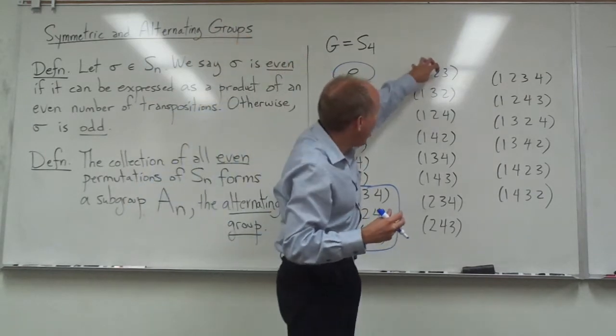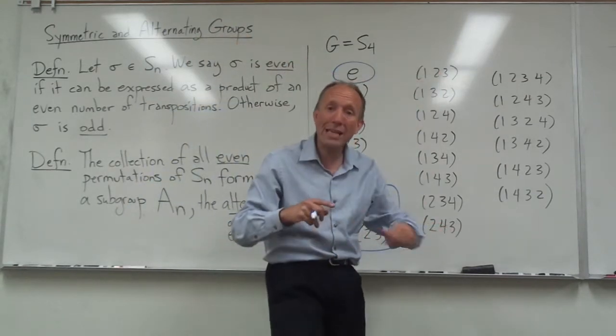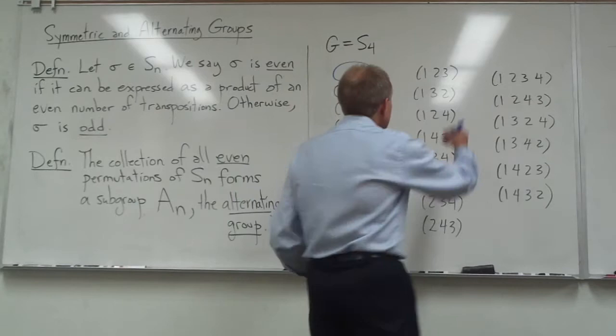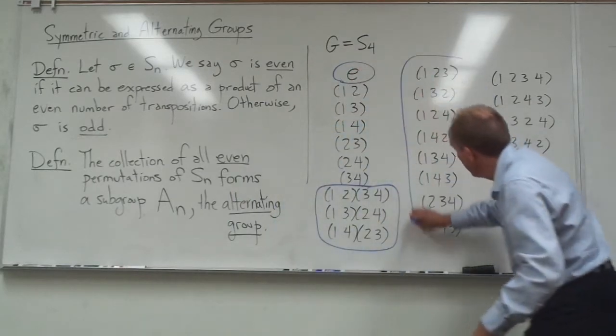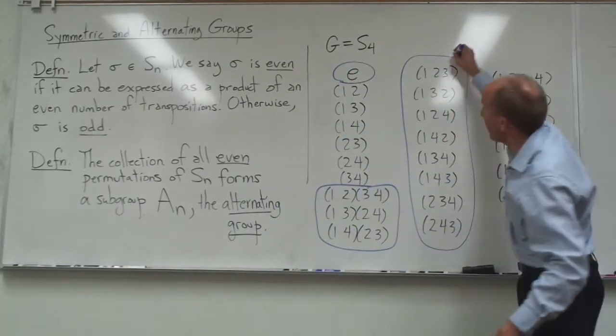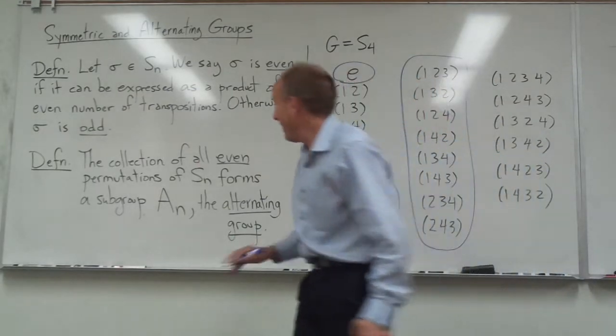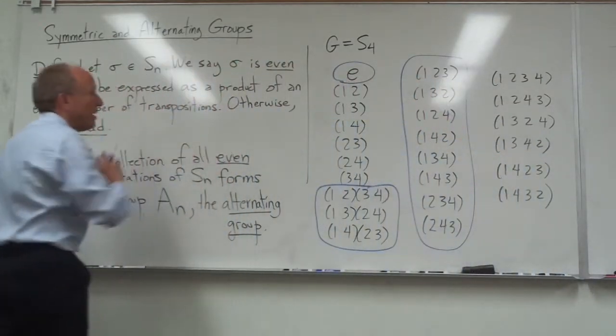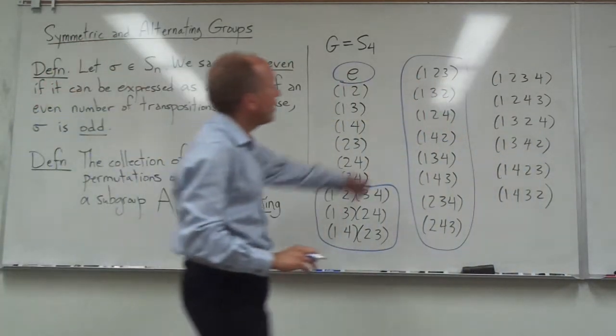Well, these cycles have odd length, which means as permutations in Sn, they are even, which puts them squarely inside of A4. A4 is the even permutations. On the other hand, the cycles of length four over here are all odd.